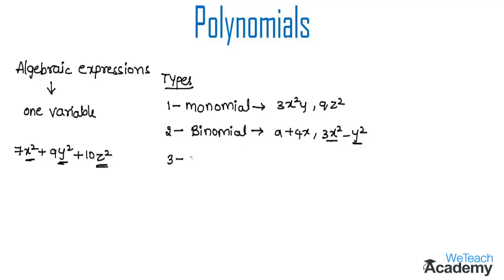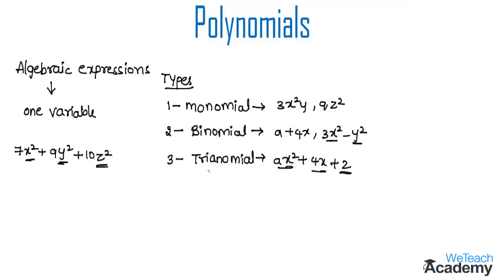A trinomial expression is an expression containing three terms. Consider the expression ax squared plus 4x plus 2. As this expression has 3 terms, we call it a trinomial expression.